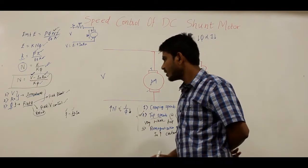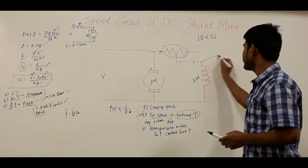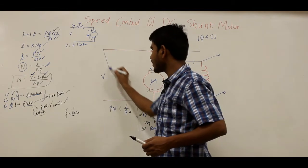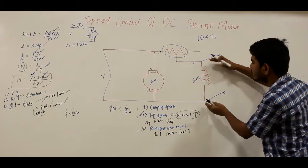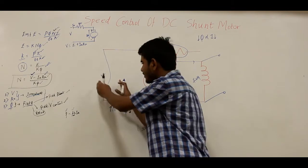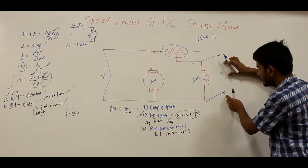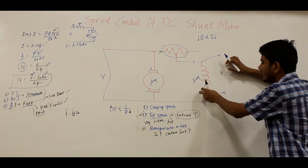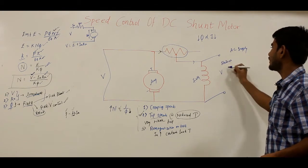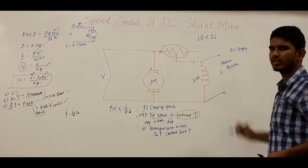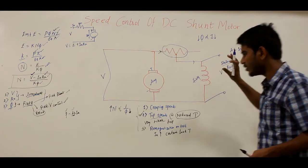Moving to the field voltage control method: here a separate variable voltage source is connected to the field winding, apart from the main supply connected across the armature. By varying this separate voltage source, the field flux can be varied. If AC supply is available, an electronic rectifier — such as a three-phase bridge configuration — can be used to vary the output voltage and thereby control field flux and motor speed.